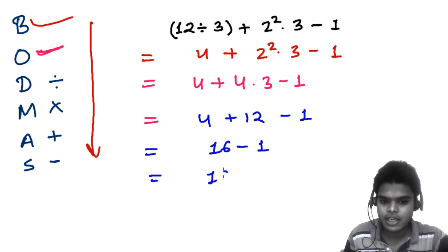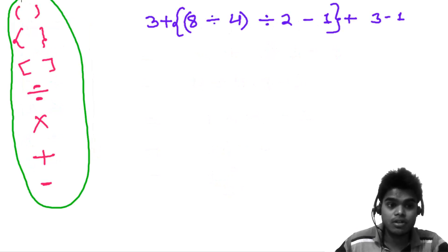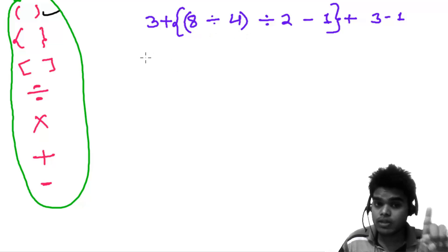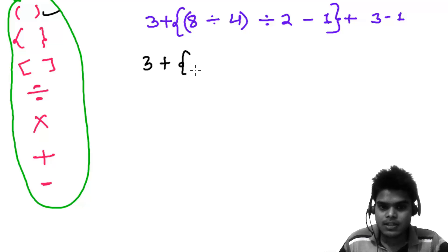This is your guru mantra for order of operations. Always follow this. First, I have to see the small brackets or parenthesis. Let's solve this. I told you, one operation at a time. 3 plus 8 divided by 4 gives me 2, then divided by 2 minus 1, plus 3 minus 1.